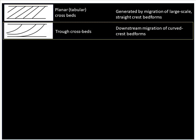Another representation of crossbeds is in the form of trough crossbeds. These form under similar conditions as planar crossbeds, but the difference is that they are formed during the migration of curved-crest bedforms. In other words, the dunes or ripples that create trough crossbeds have wavy or curved crests.